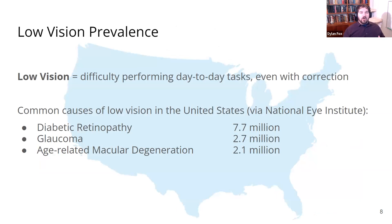All of these types of disabilities we group together as low vision, which is defined as any problem with your vision that affects your ability to perform day-to-day tasks, even with corrections like glasses or contact lenses. Low vision affects millions of people. In the United States alone, there are 7.7 million people with diabetic retinopathy, 2.7 million with glaucoma, and 2.1 million with age-related macular degeneration, just to name a few.